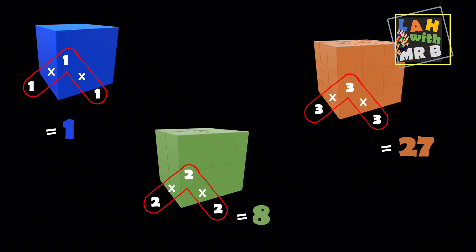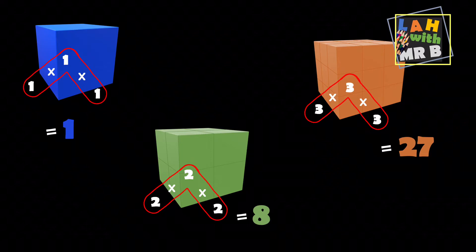For the third one, we've got three times three times three. We go through the same process again. Three times three is nine times three again, and that gives us 27.